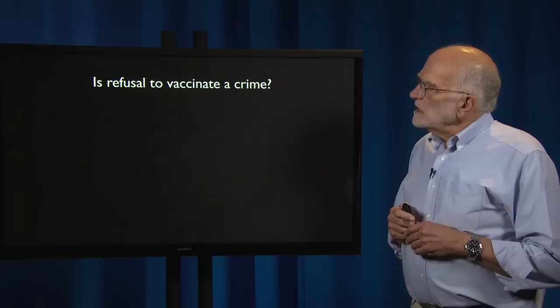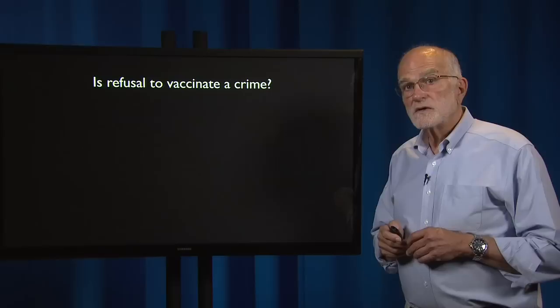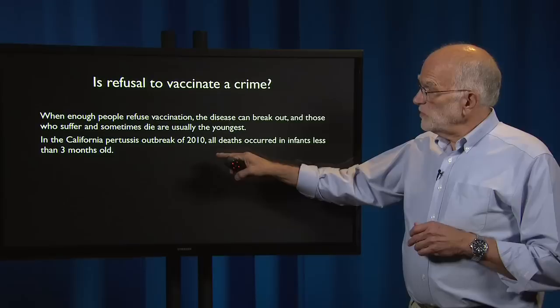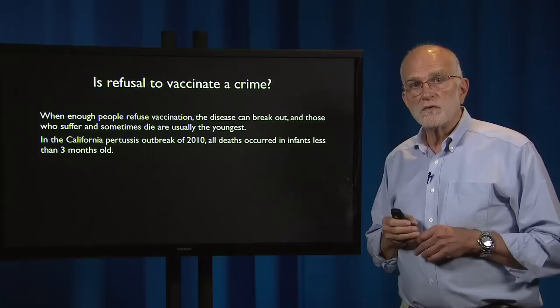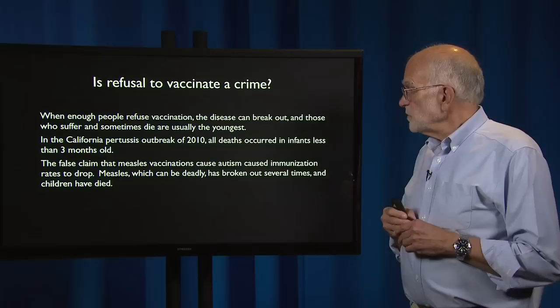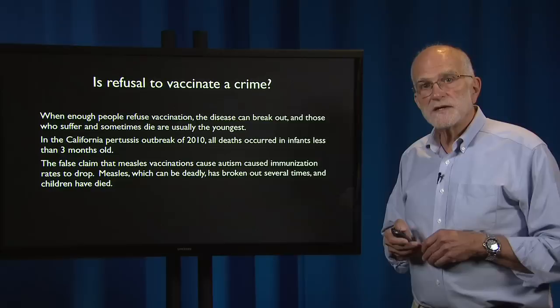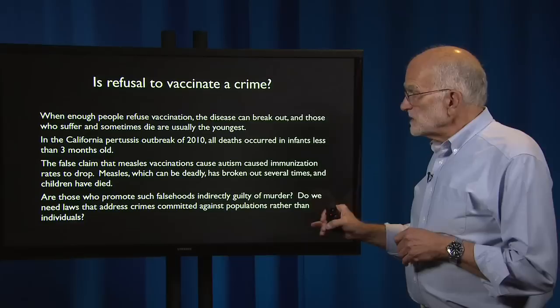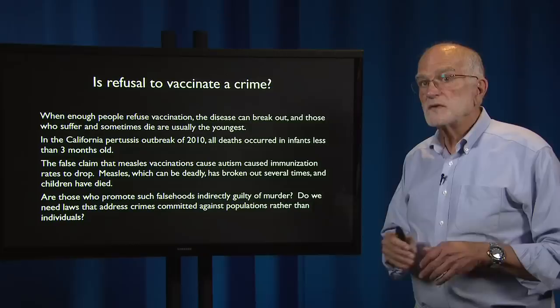That leads us to raise this question: is refusal to have your child vaccinated a crime? When enough people refuse vaccination, the disease can break out and those who suffer and sometimes die are usually the youngest. For example, in the California pertussis outbreak in 2010, all of the deaths occurred in infants who were less than three months old — the young and the innocent. The false claim that measles vaccination caused autism caused immunization rates to drop. Measles, which can be deadly, has broken out several times and children have died as a result of this reaction. Are those who promote such falsehoods indirectly guilty of murder or perhaps of manslaughter? Do we need laws that address crimes committed against populations rather than individuals? Our legal system is not particularly well constructed to deal with this.